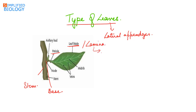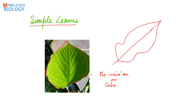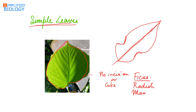Depending on the incision present on the lamina, leaves are divided into two types: simple leaves and compound leaves. In a simple leaf, the entire lamina is present without any incisions or cuts. If an incision is present, it does not reach the midrib. Examples include ficus, radish, and mango.